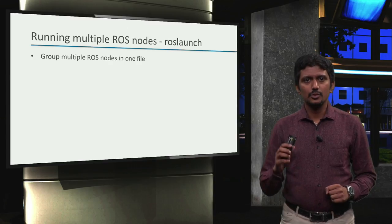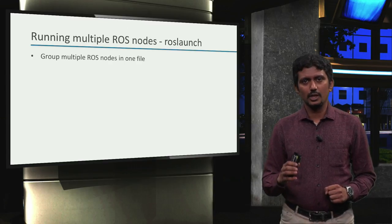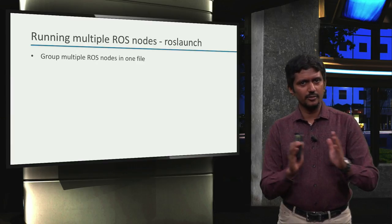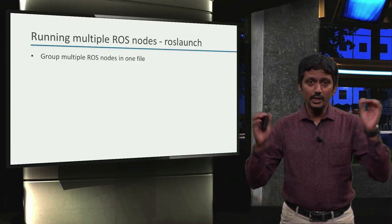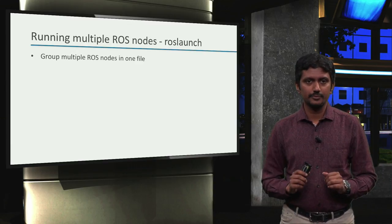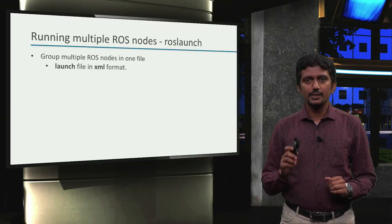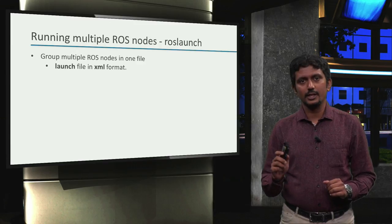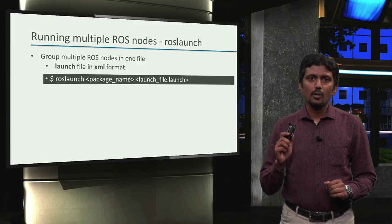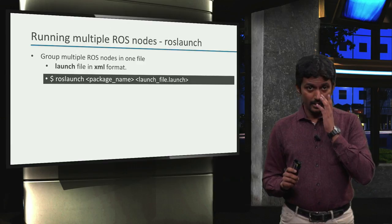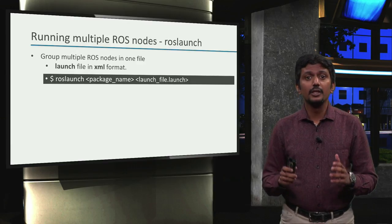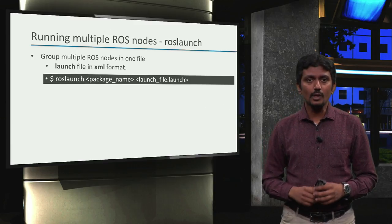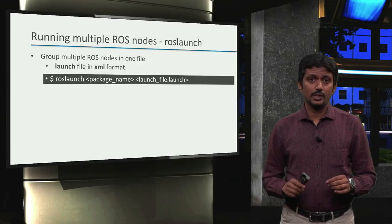The idea here is to group ROS nodes we want to start in one file. Note that the code for all these nodes are still in separate files, but we will just group all these files in one location. And that file is called a launch file. In ROS, the format of this file is XML. And once we have such a file, we can start all the ROS nodes specified within it with the ROSLaunch command, like this.